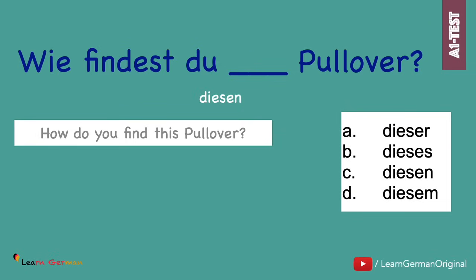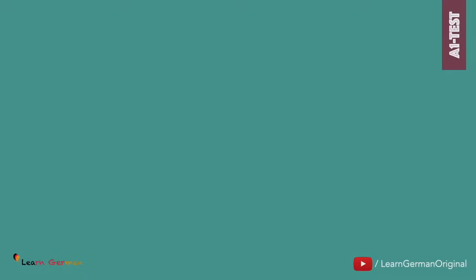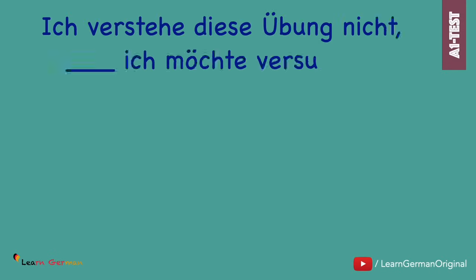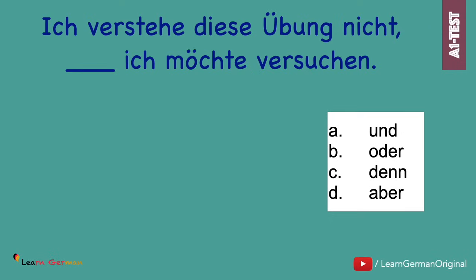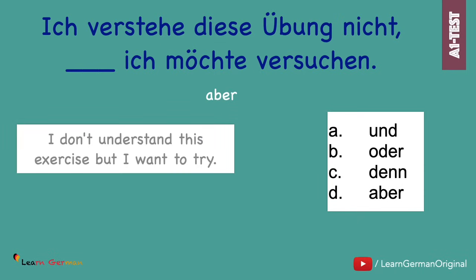Du is the nominative subject. And now the last one. Ich verstehe diese Übung nicht. Aber ich möchte versuchen. All these conjunctions stand at position zero, but the correct answer is: Ich verstehe diese Übung nicht. Aber ich möchte versuchen.